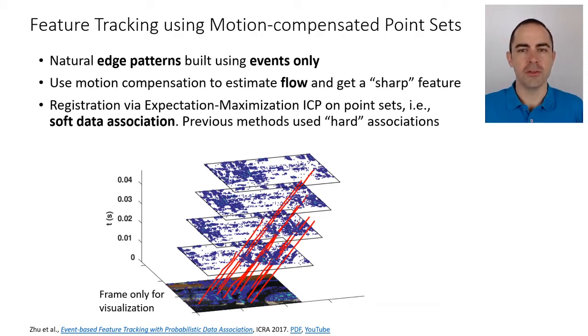What they are doing is detecting features on the event using the concept of motion compensation. What this plot represents is, well there is a frame just there for visualization, but basically in red are these feature tracks and these kind of frames or frames of points are 2D point sets that are generated by motion compensation.